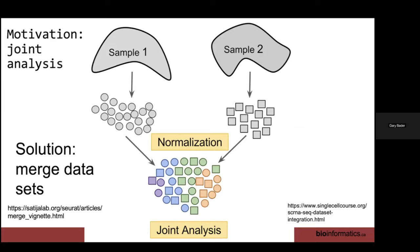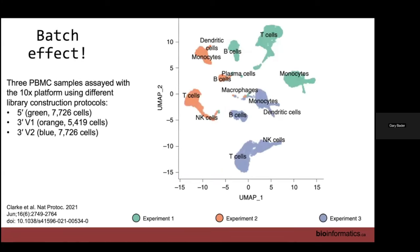The motivation is that we want to frequently combine samples and analyze them jointly. If you only have one sample, you do not need to worry about this lecture. But if you have more than one sample, this is important. Typically, each sample gets normalized by itself, and then you need to merge the information to do a joint analysis. However, one of the major problems that occurs is that sometimes this merging doesn't work well, and one of the biggest issues is that there's a batch effect.